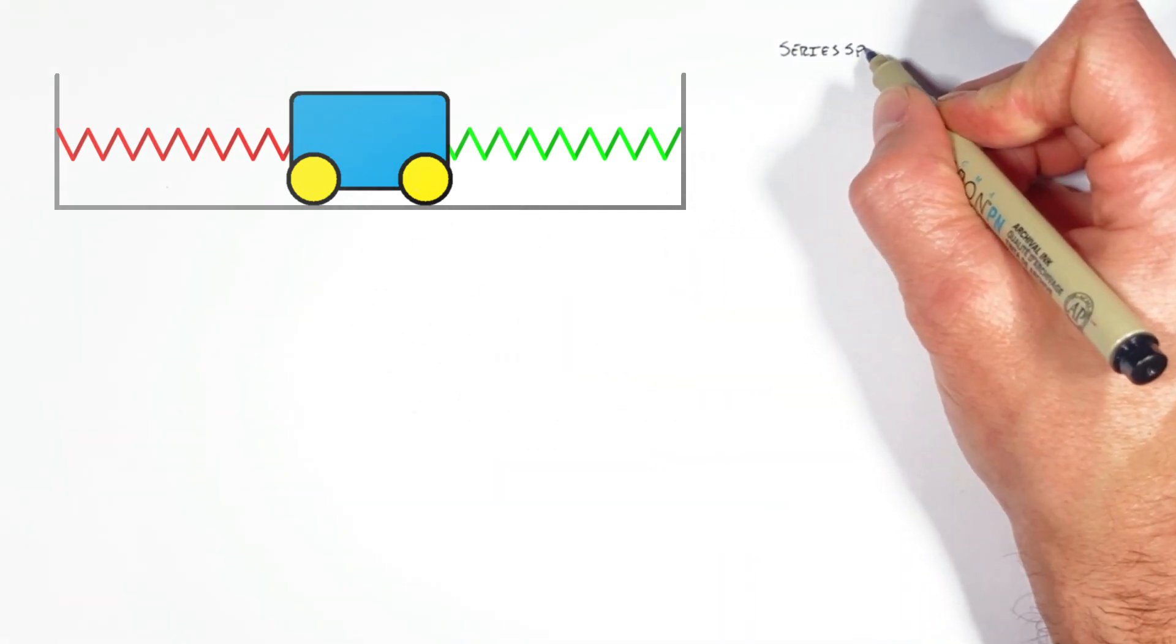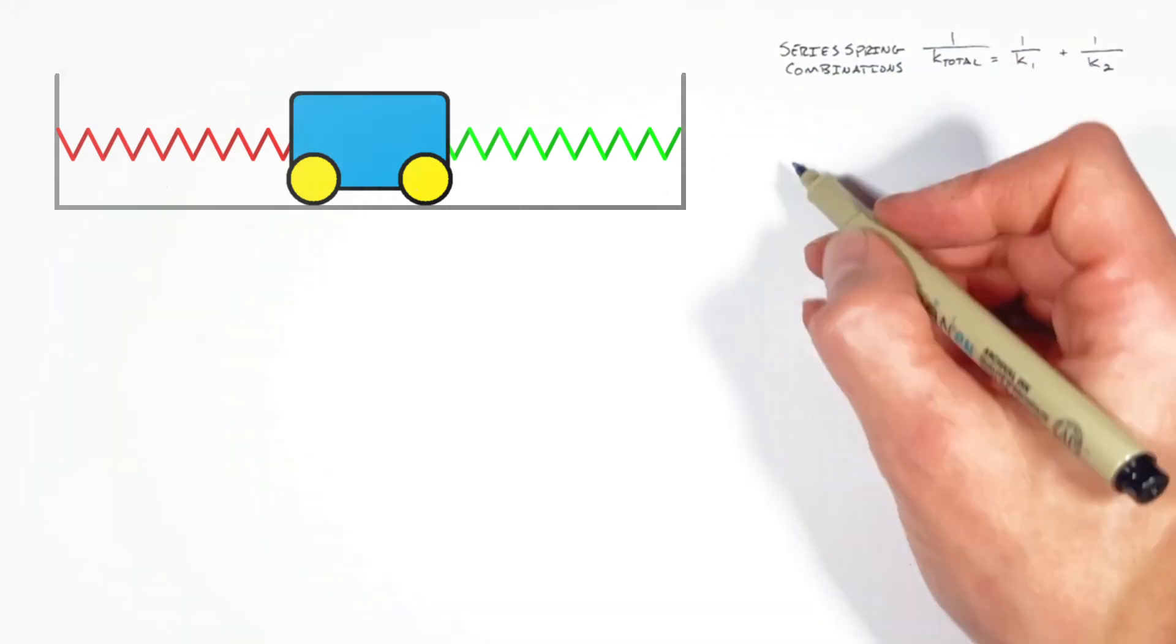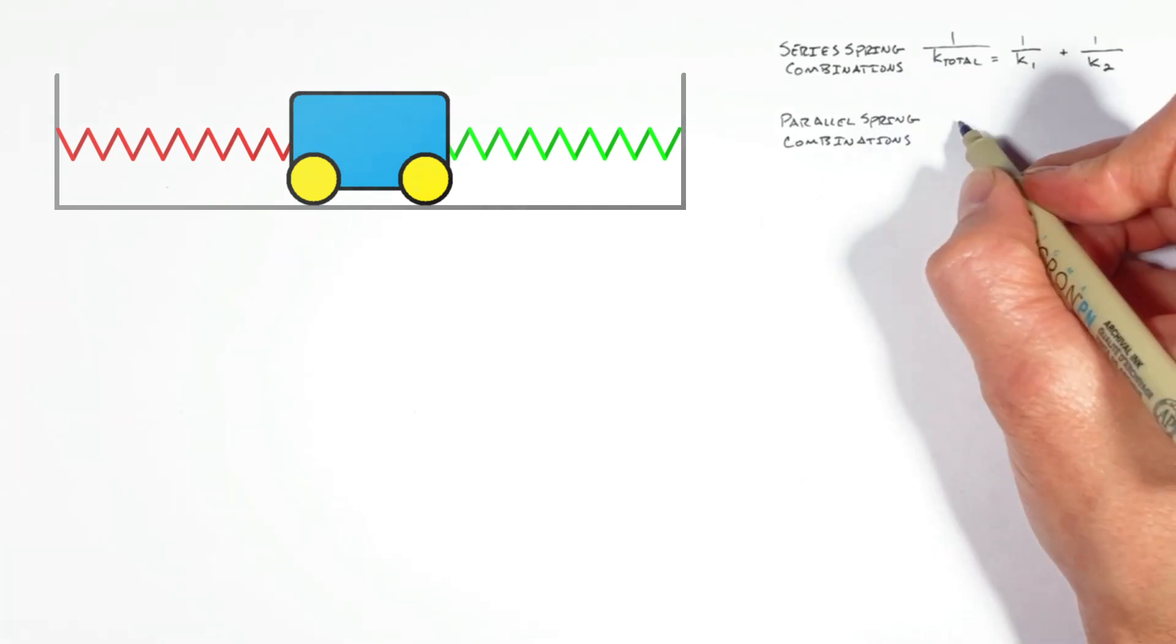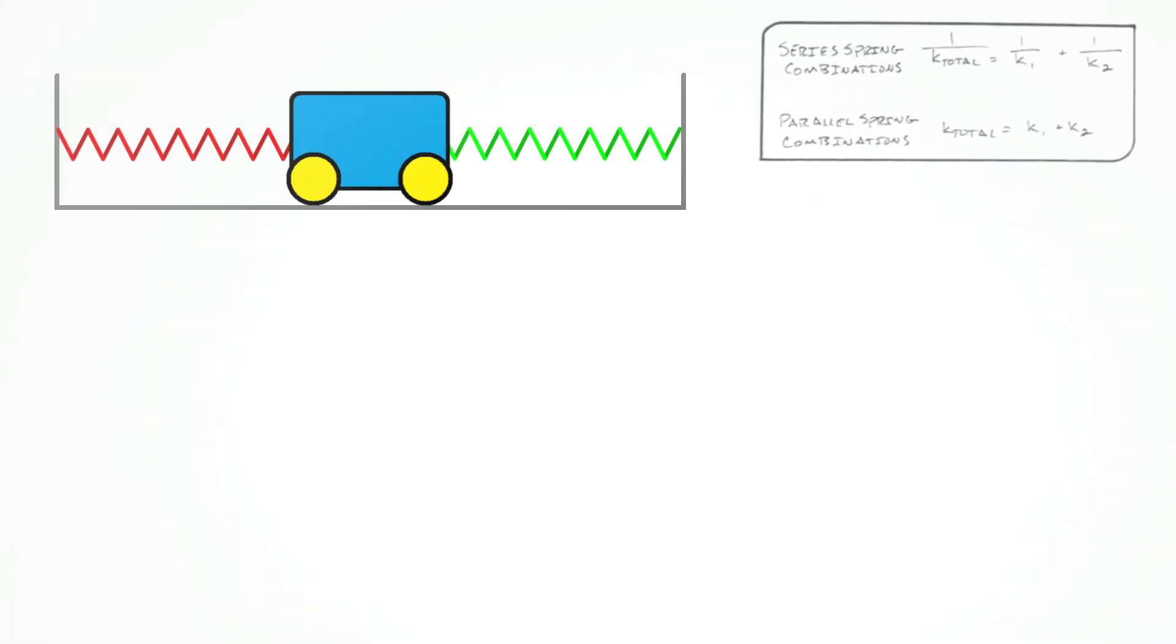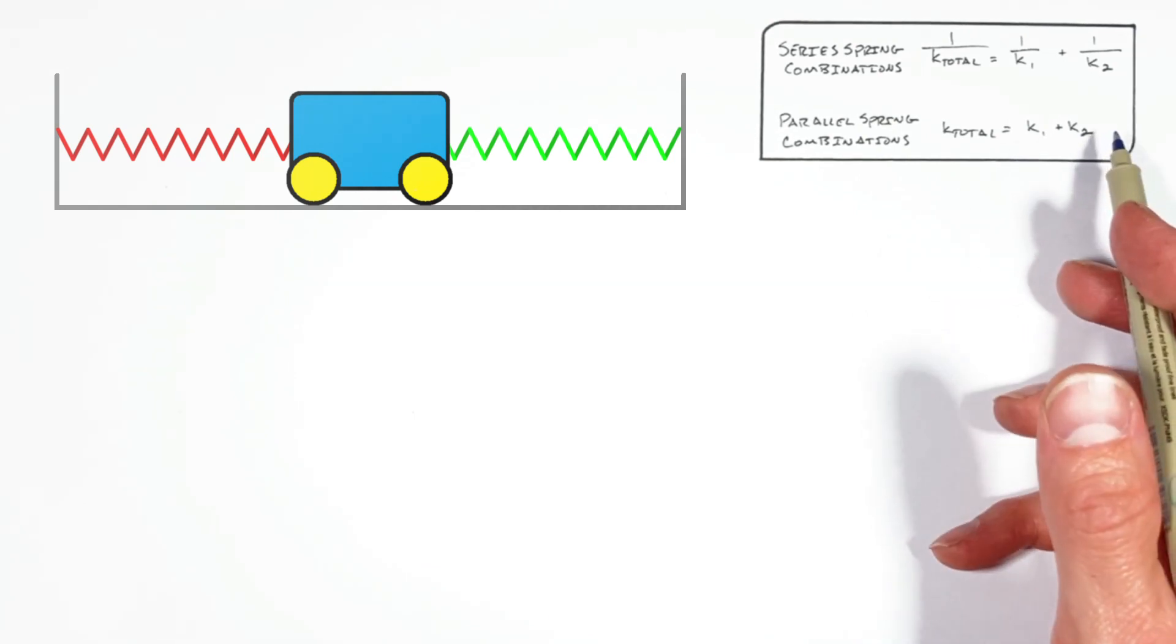See, depending on whether we connect springs in series or parallel, there's different equations that govern the stiffness of the total or effective combined spring which is formed. And I've derived these equations in the past, if you want to see that done.